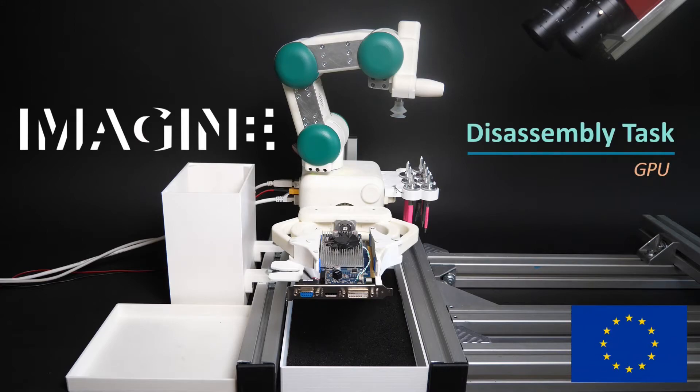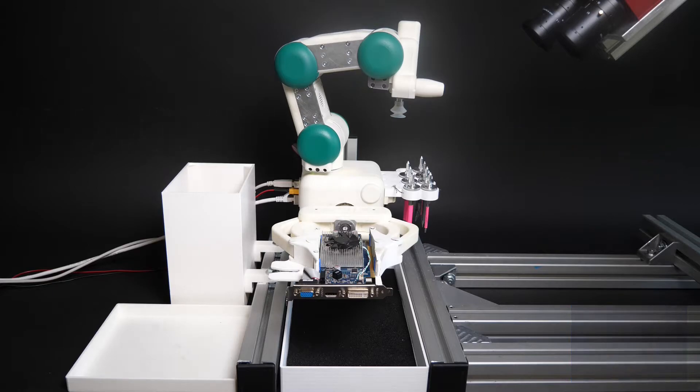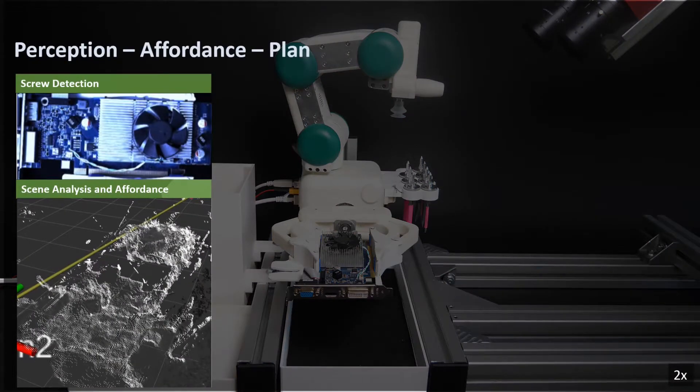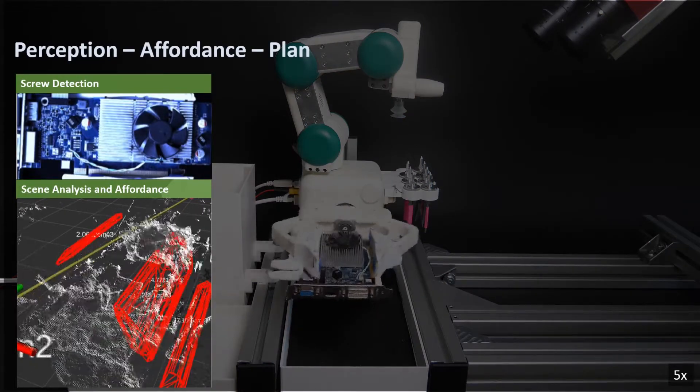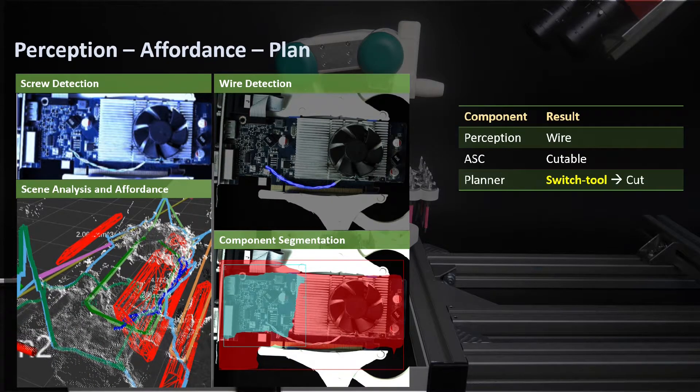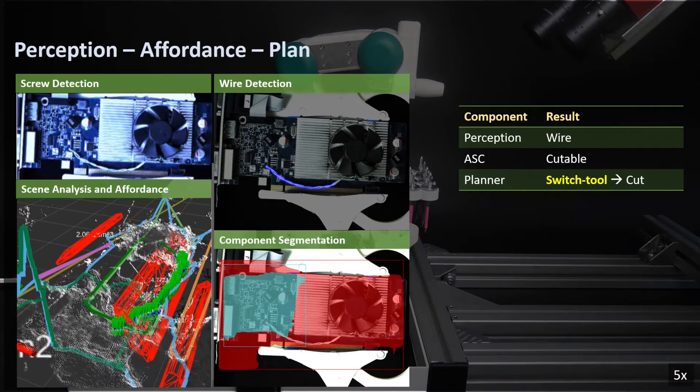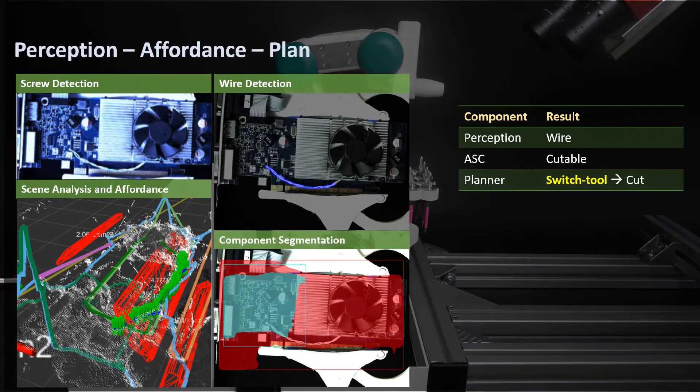In the next, we demonstrate the Imagine system for disassembly tasks with GPU as an alternative device. The state estimator detects no screws but a cable that connects the cooling unit to the main PCB board. This cable is visualized on the point cloud with a blue curve. The cutable affordance is overlaid on the blue curve with green beams. The planner decides to use the rotating cutting tool to cut the wire.